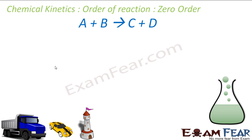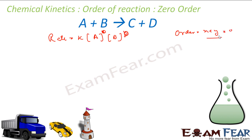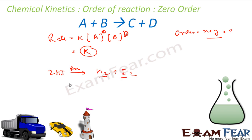For a zero order reaction, the rate law is: rate = K[A]^0[B]^0, meaning both x and y are zero. Therefore the rate does not change with concentration, since [A]^0 and [B]^0 both equal one, making rate equal to K (a constant). For example, the decomposition of HI in the presence of a gold catalyst — 2HI → H₂ + I₂ — is experimentally proved to be a zero order reaction, independent of the concentration of HI. Very few reactions are zero order.